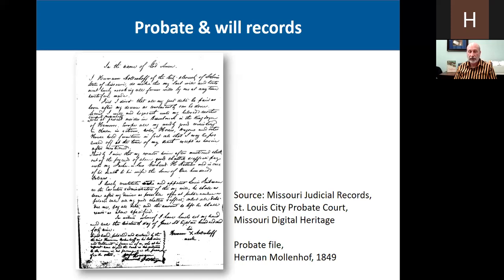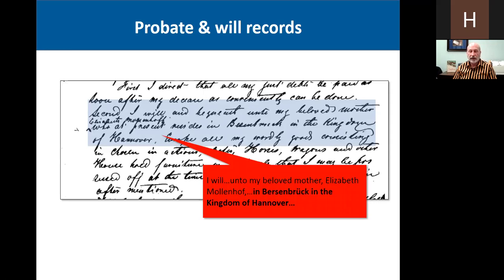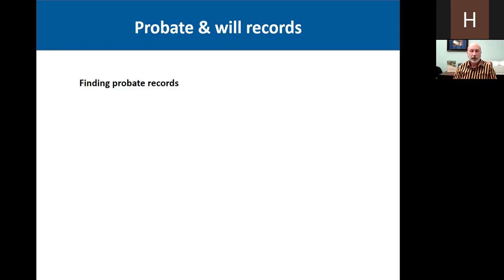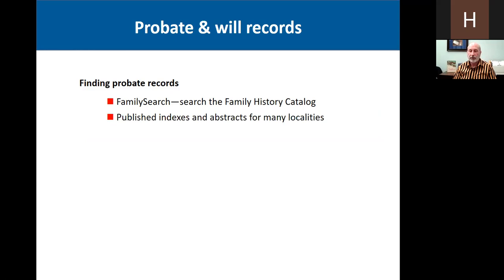Probate and will records are another potential source. We're going to look at this will for Hermann Mollenhoff from 1849 — these happen to be on the Missouri Digital Heritage website. It states: I will unto my beloved mother, Elizabeth Mollenhoff, in Berzenbrück in the Kingdom of Hanover. So if his mother lives in Berzenbrück, then it's quite possible that's where he was born, and that's where you should look for records over in Germany. For finding probate records: FamilySearch has many microfilmed and now digitized records. There are also many published indexes and abstracts for many localities, or check your local courthouse, local libraries, and archives where your ancestor lived.